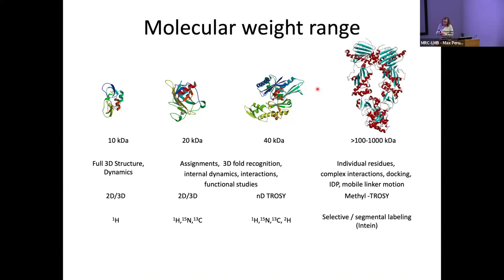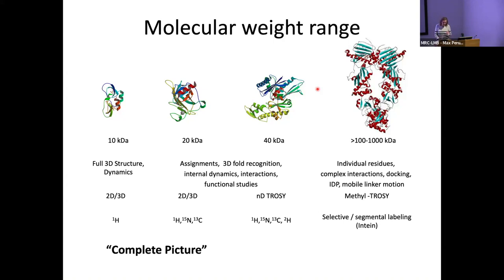If you've got a bigger system, we couldn't do a full structural determination, but if you had specific questions — like looking at a binding interface or flexible loops important in your interaction — you could go for specific labeling, segmental labeling, or methyl TROSY experiments with methyl 13C labeling. The smaller the system, we can give you a more complete picture; the bigger the system, we're looking at more site-specific information.